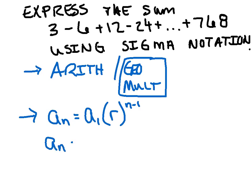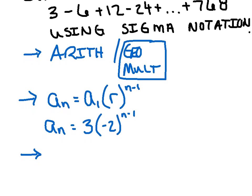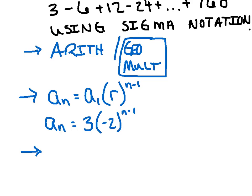The first term is three and the common ratio r is negative two, since we keep multiplying by negative two each time. The nth term is three times negative two to the n minus one power. There's no cleanup to do — you're not allowed to multiply the three and the negative two together because they have different exponents. The last step is to express this in sigma notation.